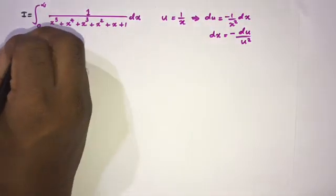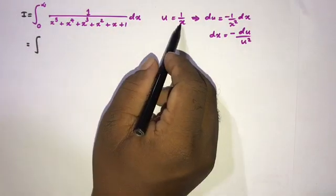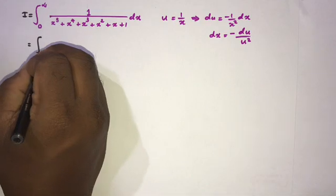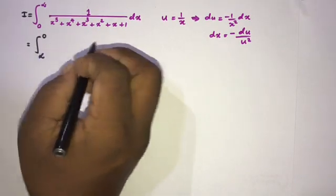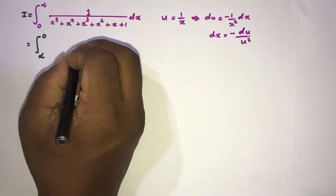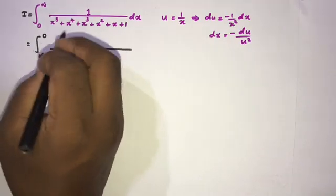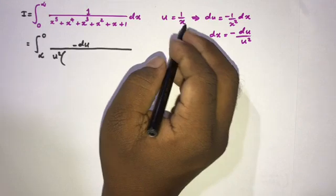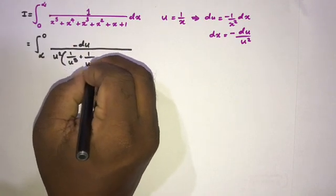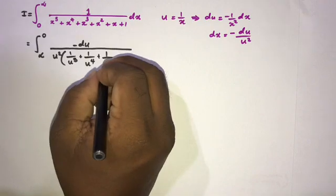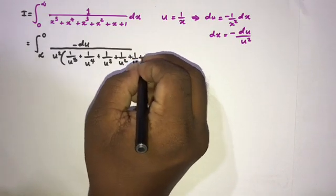Now we substitute and change the limits. When x approaches 0, u approaches infinity; when x approaches infinity, u approaches 0. Substituting dx as minus du over u squared, and replacing each x with 1/u, we get 1 over (1/u)⁵ + (1/u)⁴ + (1/u)³ + (1/u)² + (1/u) + 1, times minus du over u squared.